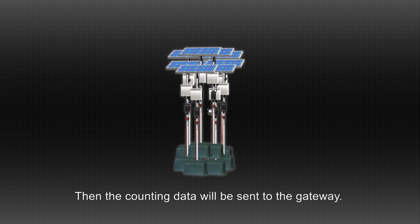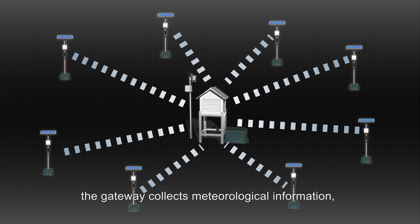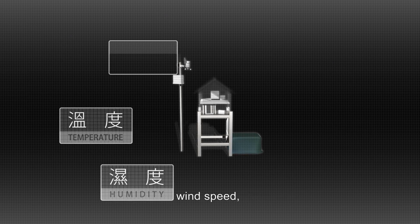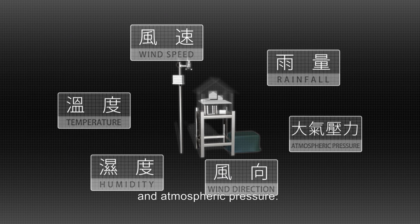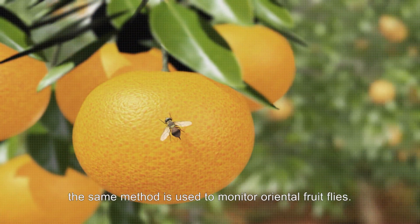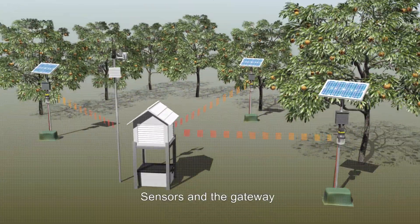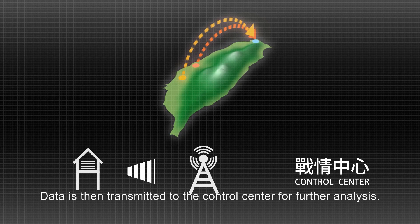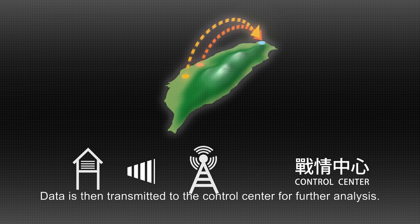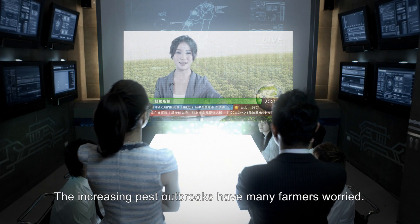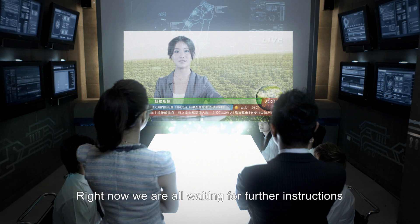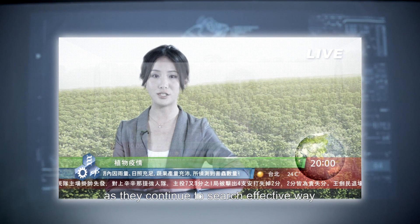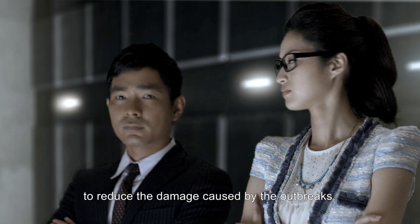The counting data will be sent to the gateway. Meanwhile, the gateway collects meteorological information, including temperature, humidity, wind speed, wind direction, rainfall, and atmospheric pressure. During the day, the same method is used to monitor oriental fruit flies. Sensors and the gateway are responsible for sensing environmental data. Data is then transmitted to the control center for further analysis. The increasing pest outbreaks have many farmers worried. Right now, we are all waiting for further instructions from the pest management and control center as they continue to search for ways to reduce the damage caused by the outbreaks.